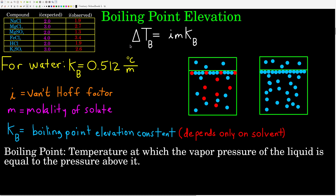There's an equation that describes the elevation of the boiling point — the change in the boiling point. Delta Tb equals the Van't Hoff factor times the molality times a constant called the boiling point elevation constant, Kb. The boiling point elevation constant depends upon the solvent and not the solute, because colligative properties depend only upon how many solute particles there are and not their identity. Molality is used instead of molarity because molality does not change with temperature, whereas molarity does — since changing temperature changes the density and thus the volume of the solution.